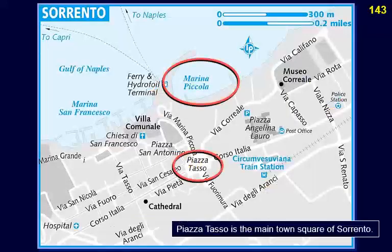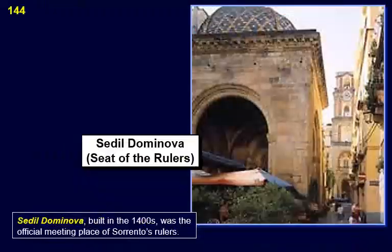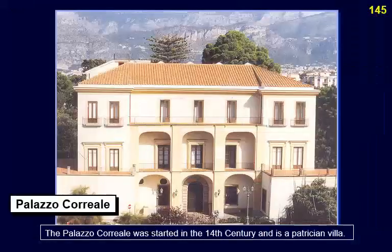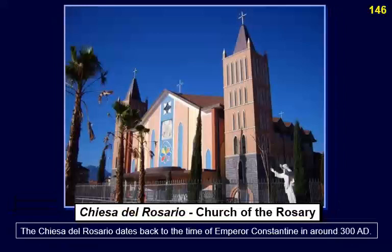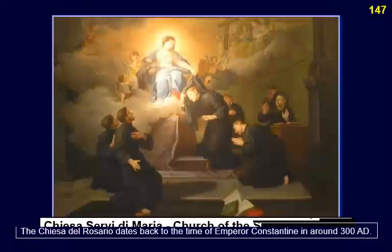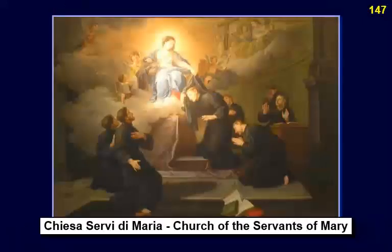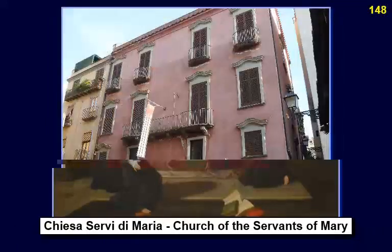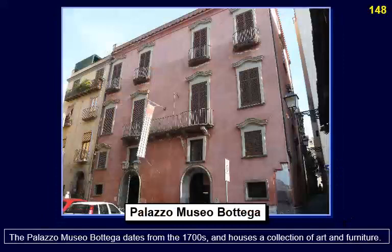Sorrento sites: Piazza Tasso is the main town square of Sorrento. Sedil Dominova, built in the 1400s, was the official meeting place of Sorrento's rulers. The Palazzo Correale was started in the 14th century and is a patrician villa. The Chiesa del Rosario dates back to the time of Emperor Constantine, around 380 AD. The Palazzo Museo Correale dates from the 1700s and houses a collection of art and furniture.